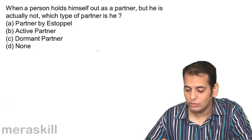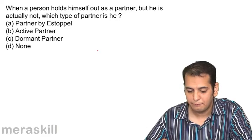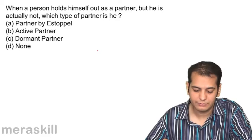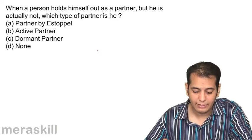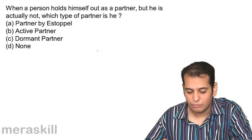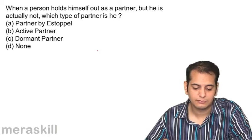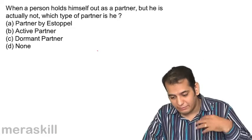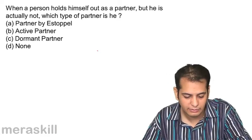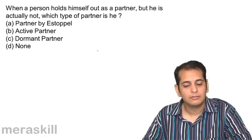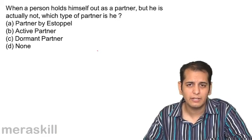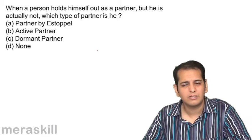When a person holds himself out as a partner but he is actually not, which type of partner is he? He is a partner by estoppel. He becomes a partner by estoppel/holding out — partner by holding out and partner by estoppel are the same.